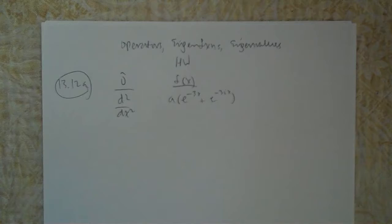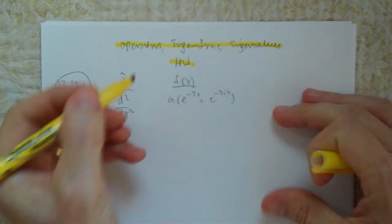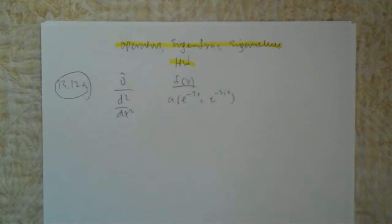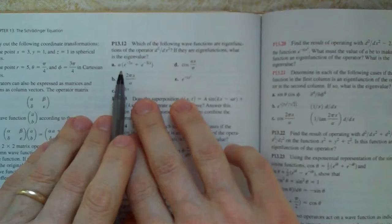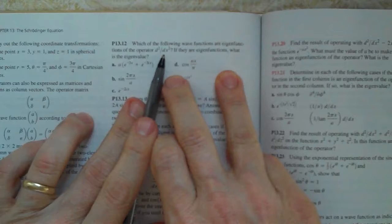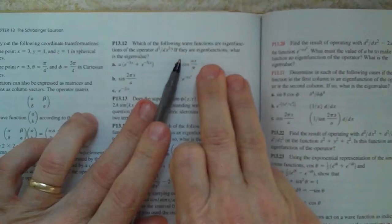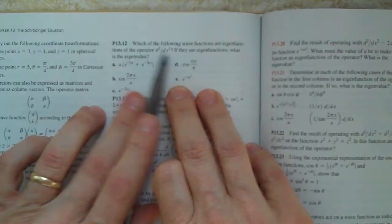More practice on operators, eigenfunctions, and eigenvalues - also in response to someone's question. Problem 13.12: which of the following wave functions are eigenfunctions of the operator d²/dx²? If they are eigenfunctions, what is the eigenvalue? Here's the function and the operator.